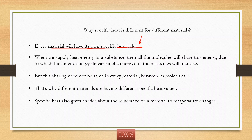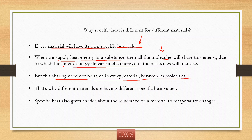Every material has molecules in it. Whenever we supply some HEAT energy to a substance, these molecules share this energy equally. Because of this energy, the linear kinetic energy of the molecule increases, and when that increases, the temperature of the substance changes. But this sharing is not the same in every material — molecules in water may share energy differently, and molecules in iron may share differently. So, as the sharing is not the same in every material, materials will have different specific HEATs.